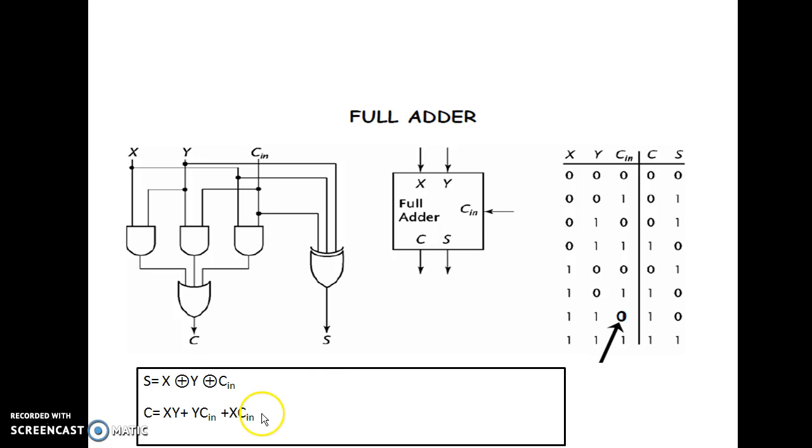For the second output, you have xy plus ycin plus xcin. So, accordingly, your AND gate 1 is x and y. Then you have y and cin as your second variable.